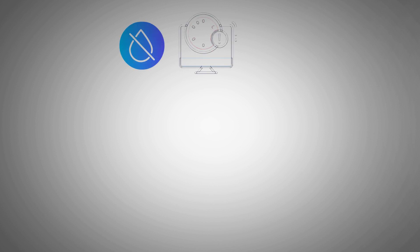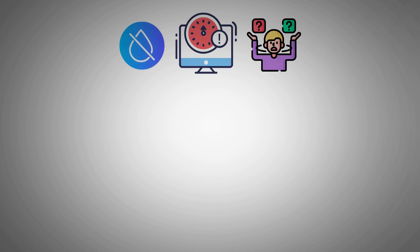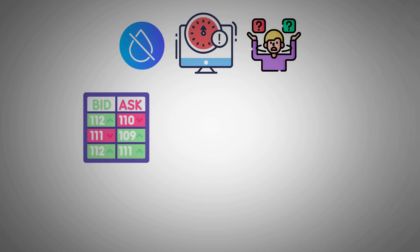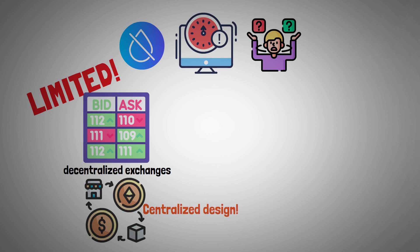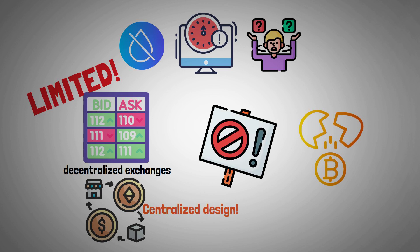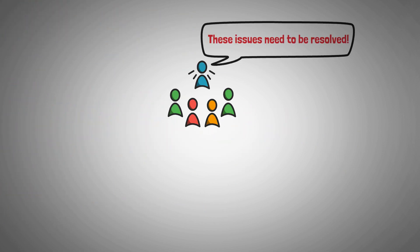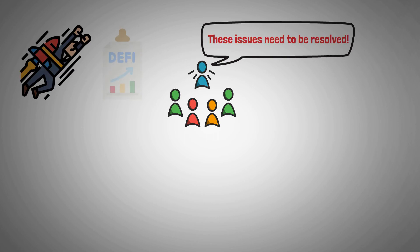Due to poor liquidity, high latency, and a lack of compelling product offerings, today's central limit order book decentralized exchanges have limited usability. In addition to these problems, almost all DEXs have rather centralized designs, which make them vulnerable to censorship and unreliable. The community is of the opinion that these issues need to be resolved in order to fully realize the potential of decentralized finance.